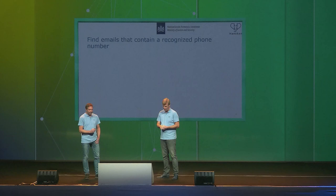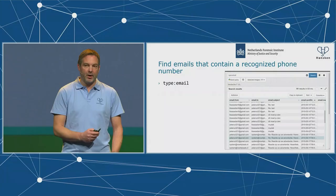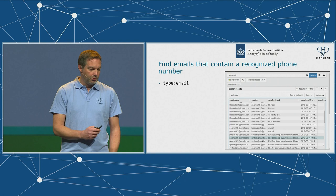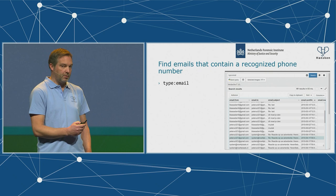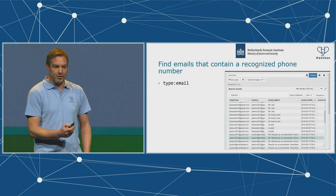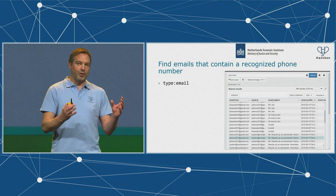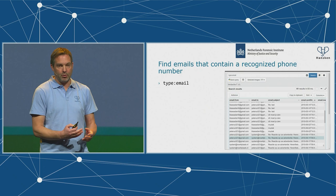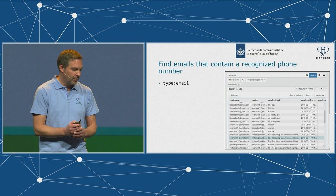Next query: find emails that contain a recognized phone number. You can find all emails by saying 'give me everything of type email.' Then you can combine queries to get a subset. To find phone numbers inside emails, that's what Hansken calls a tracelet. Traces are things like emails; tracelets are smaller things inside traces, like phone numbers. One email can contain many tracelets.